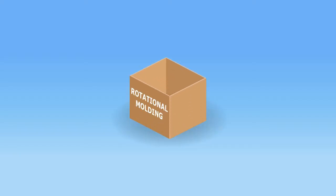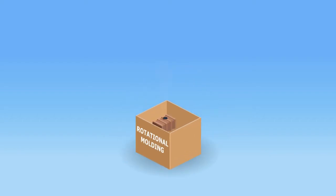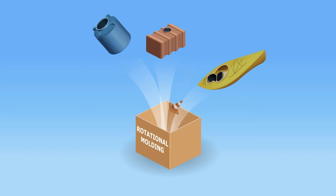Rotational molding is how most large plastic products are made. Things like water and fuel tanks, kayaks, road barriers, and toys are all rotationally molded.